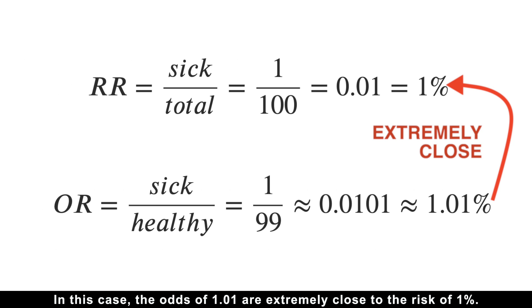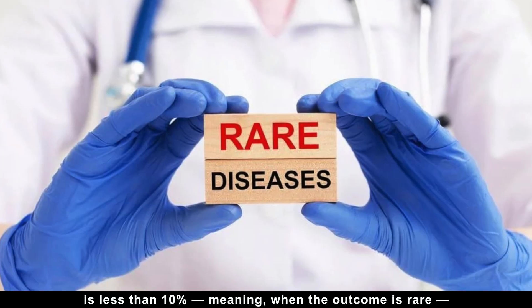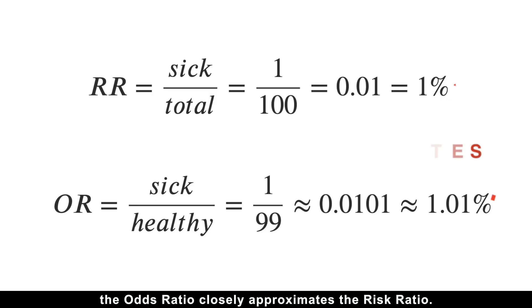In this case, the odds of 1.01% are extremely close to the risk of 1%. A helpful rule of thumb is that when the prevalence of a condition is less than 10%, meaning when the outcome is rare, the odds ratio closely approximates the risk ratio.